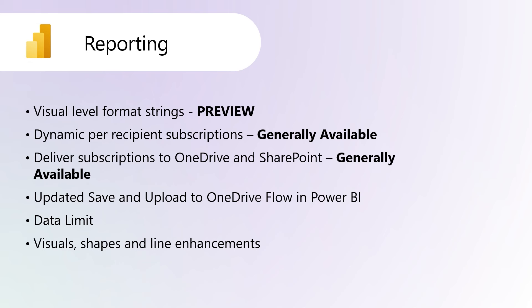Dynamic Per Recipient Subscriptions for Power BI and paginated reports are now generally available. They are designed to simplify distribution of a personalized copy of each report to each recipient of an email subscription. You define which view of the report an individual receives by specifying which filters are applied to their version of the report. The feature is now available in Sovereign Clouds as well.